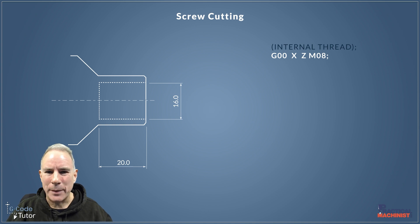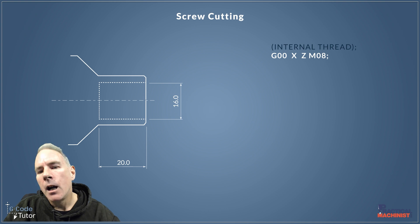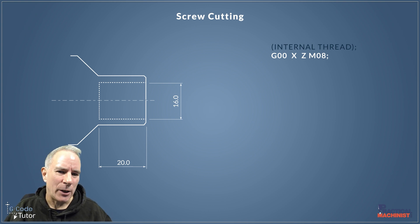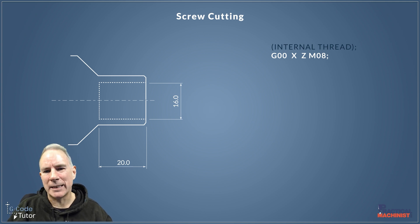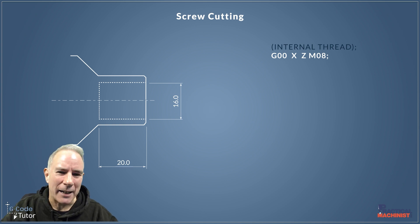Our X dimension needs to be slightly below or the same as our thread diameter. M08 puts on the coolant. I like to put on the coolant at this point so I can see inside the machine up until the start of the cut. Once the tool is in position and the coolant starts, we won't be able to see inside the machine anymore — but that's okay because we're cutting internal anyway.